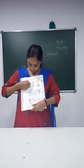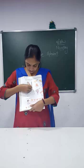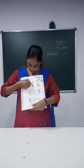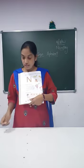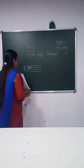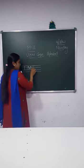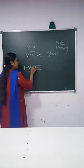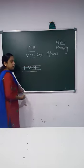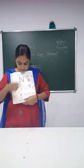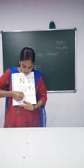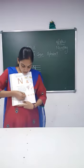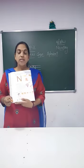And here let us trace it in crayon. Standing line, right slanting line, standing line — letter N. Standing line, right slanting line, standing line — letter N. Now let us write here. Standing line, right slanting line, standing line — letter N. Standing line, right slanting line, standing line — letter N.